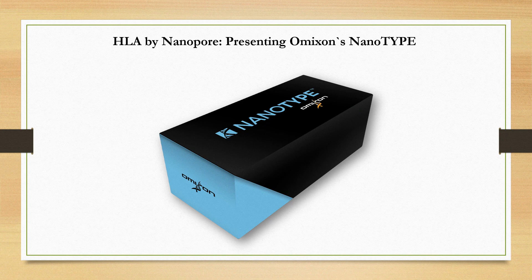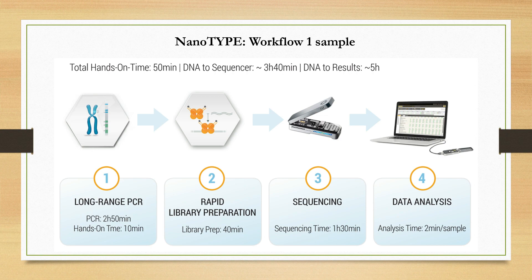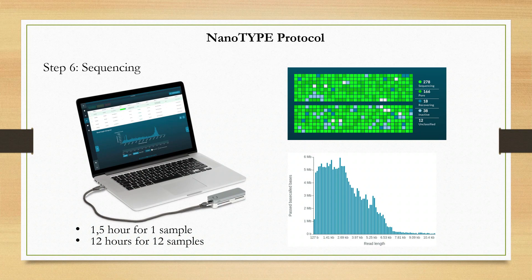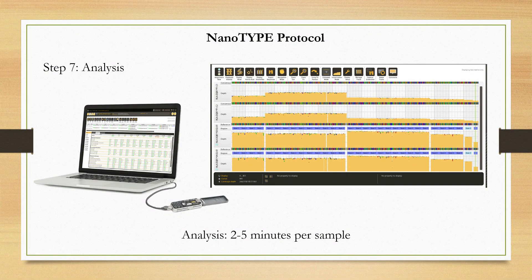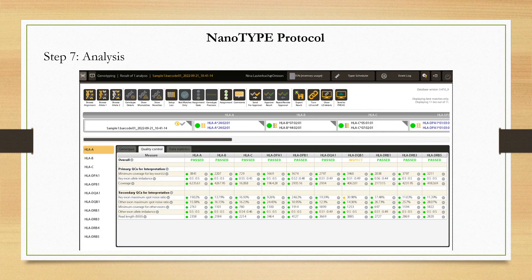The first nanopore-based HLA typing on the market was launched by Amixin. It's called Nanotype. Nanotype provides a three-field high-resolution test and long-read sequencing with minimal investment. Its workflow for one sample takes less than five hours in total, from DNA to results. For 12 samples, the workflow from DNA to the final library is about four hours and 40 minutes. The sequencing time for 12 samples is 12 hours, and up to 1.5 hours for one sample. The analysis takes two to five minutes per sample using Nanotyper, the analysis software provided by Amixin. The analysis considers only the exons, excluding the introns, and results are provided at three-field high resolution.